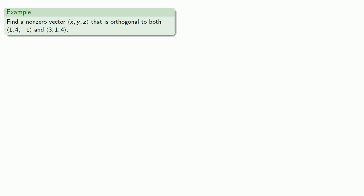So let's try to find a non-zero vector, we'll call it (x, y, z), that is orthogonal to both (1, 4, -1) and (3, 1, 4). So let's think about this a moment. The vector (x, y, z) is going to be orthogonal to (1, 4, -1) if the dot product is zero.